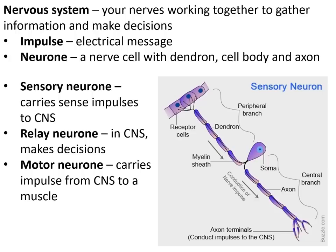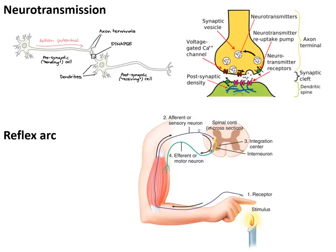The nervous system collects information and makes decisions, based on electrical impulses that travel down nerve cells called neurons. There are different types: sensory neurons gather information from the senses; relay neurons in the brain and spinal cord — the central nervous system — make decisions; and motor neurons carry messages from the central nervous system back to the muscles to make actions.